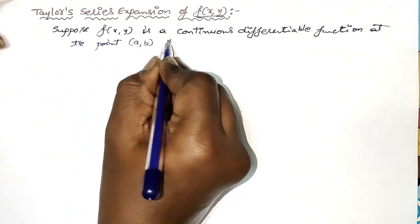Clearly we are observing that Maclaurin's series expansion gives expansion of f(x, y) in terms of x and y. But Taylor's gives expansion in terms of (x minus a) and (y minus b) — that is the difference between Taylor's and Maclaurin's. These Taylor's and Maclaurin's are also known as generalized mean value theorems. In the next video, I will give problems on both Taylor's and Maclaurin's. Thank you very much.